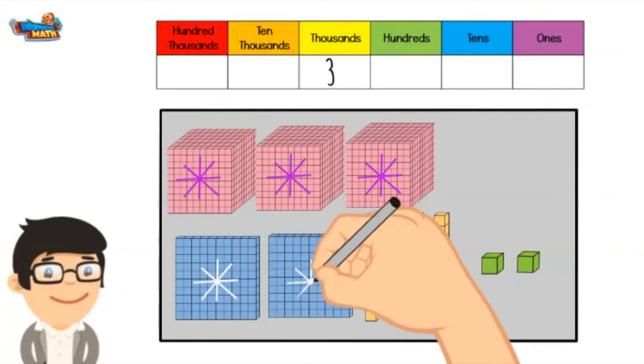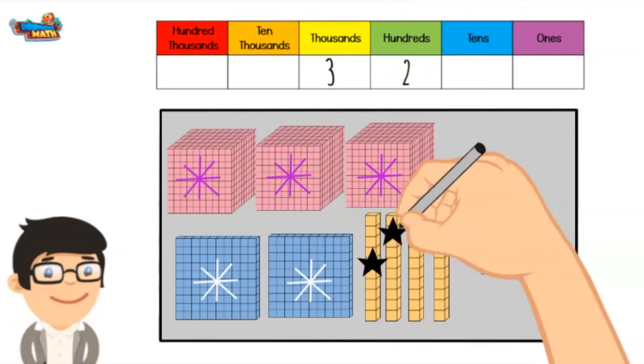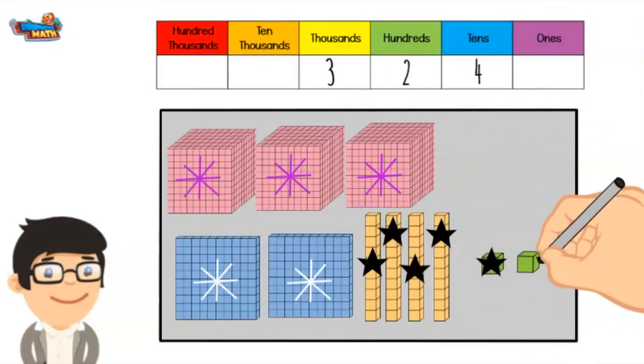We move to groups of 100. There are 2, which are worth 200. There are 4 groups of 10 and 2 ones. The number being represented is 3242.